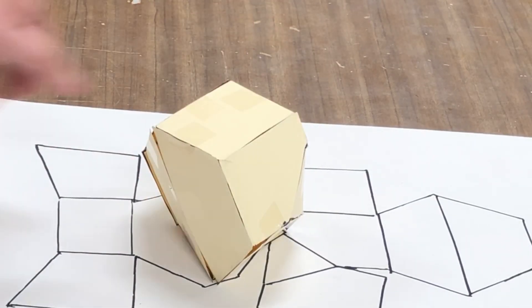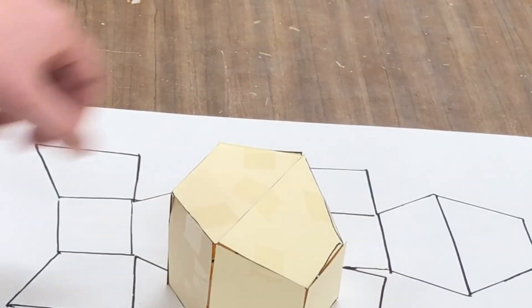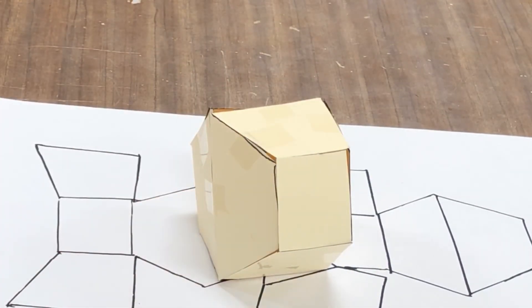In this video, I'll be showing you how to make a complicated form alongside with its net. I'll start with a hexagonal prism and alter it further.